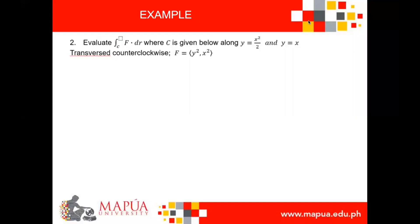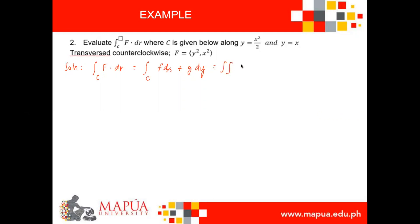First thing to do is to write the formula for evaluating the integral of f dot dr. So we write this as: the integral of f dot dr along the curve c is equal to the integral of f dx plus g dy along c, which equals the double integral of the quantity — partial derivative of g with respect to x minus the partial derivative of f with respect to y — times dA along the region r.